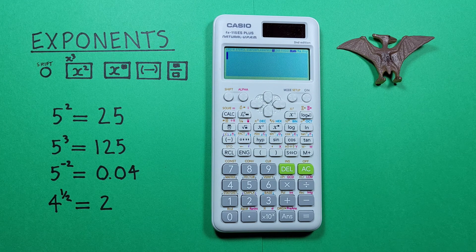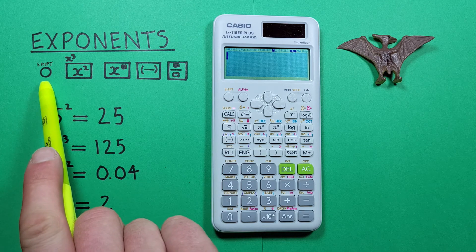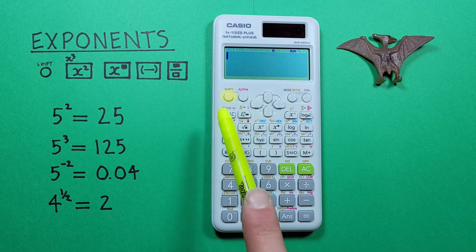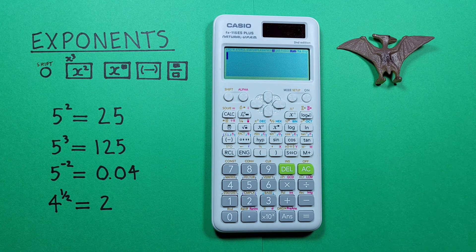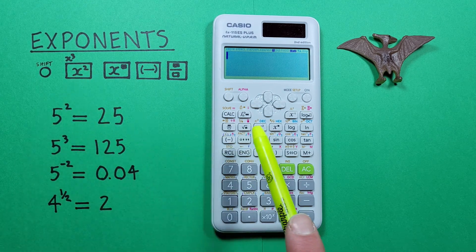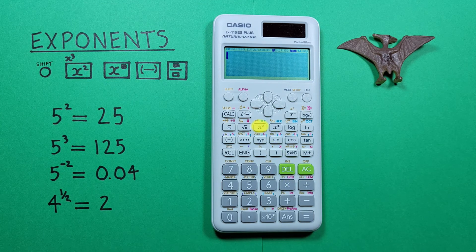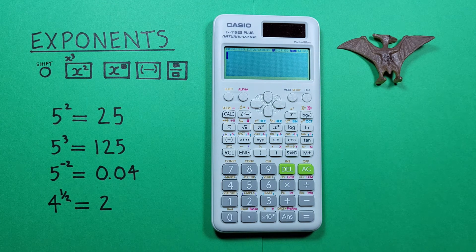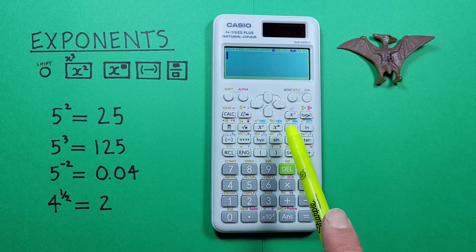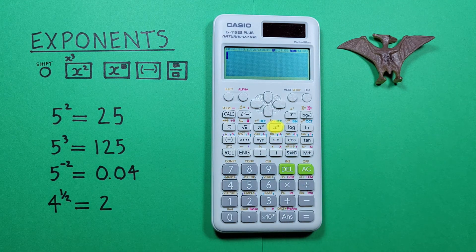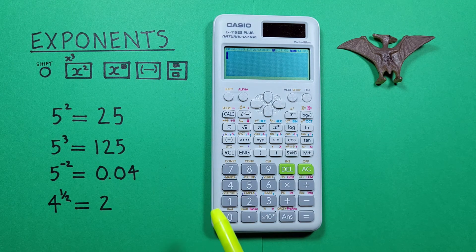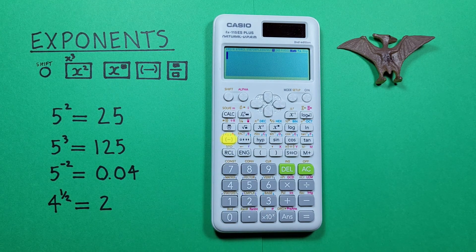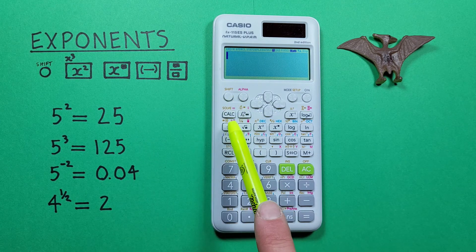To do that we'll use the shift key that looks like this, located here. The x squared key with the shift function of x cubed that looks like this, located here. The x exponent key that looks like this, located here. The negative key that looks like this, located here. And the fraction key that looks like this, located here.